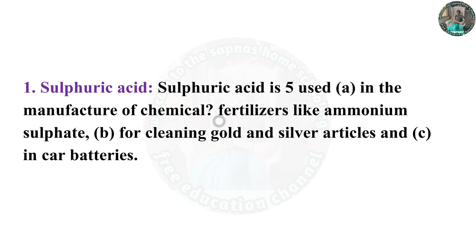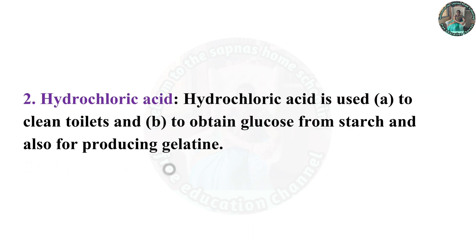Sulfuric acid is used: (A) in the manufacturing of chemical fertilizers like ammonium sulfate; (B) for cleaning gold and silver articles; and (C) in car batteries. Hydrochloric acid is used for cleaning toilets, to obtain glucose from starch, and also for producing gelatin.